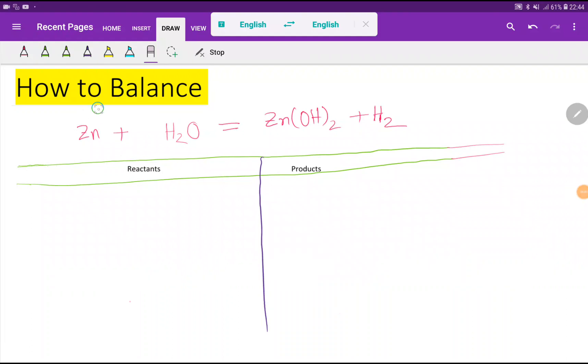Welcome to this class. Today we are going to balance the zinc plus water reaction. Zinc reacts with water and we get zinc hydroxide and hydrogen. To balance this reaction, first we have to draw a table like this.